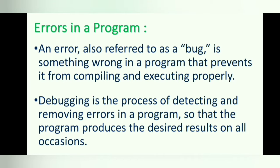Errors in a program. An error, also referred to as a bug, is something wrong in a program that prevents it from compiling and executing properly. Debugging is the process of detecting and removing errors in a program, so that the program produces the desired results on all occasions.